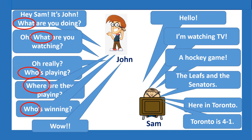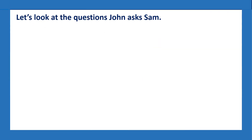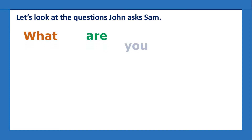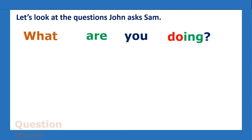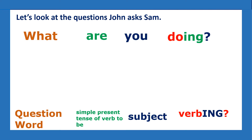And what do we call these words in English? That's right — they are called question words. Let's look at the questions John asks Sam. What are you doing? The word 'what' is the question word, so that's what you have first. Then you have the simple present tense of the verb 'to be.' Then the subject. Then the verb plus -ing.